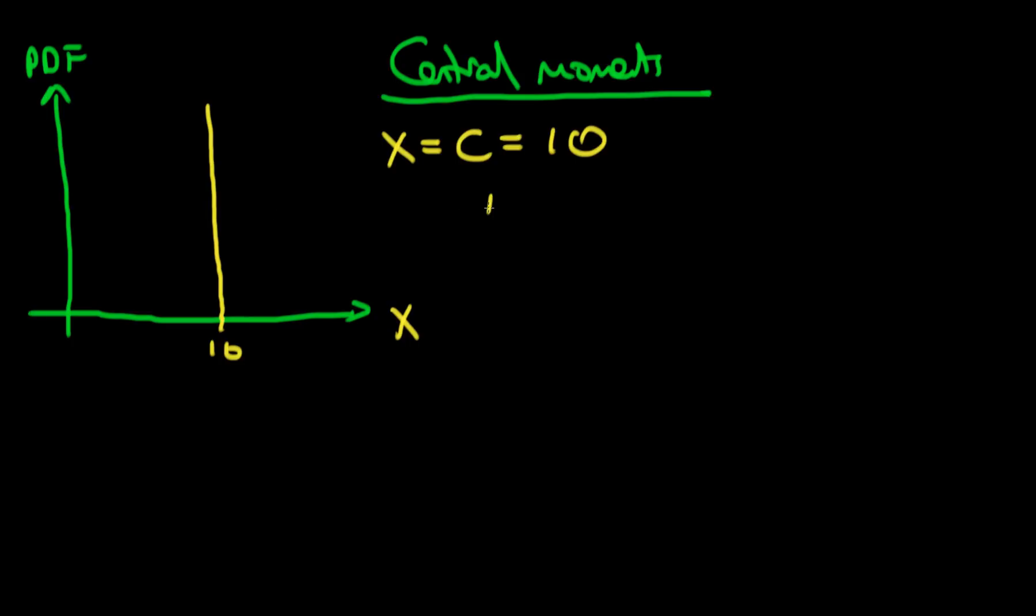So let's think about what it would actually mean to take the expectation of x and what we would get for that. Well in principle we could do an integral and in order to do the integral we would need to integrate something called a Dirac delta function. Don't worry about what a Dirac delta function is. I just wanted to include that for completeness. But intuitively the expected value of x would just be equal to 10 because our variable just always takes on a value of 10.